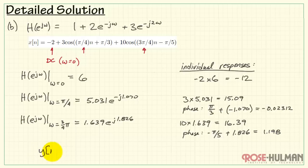Now, with these values, we're in a position then to write the finished expression for the output. We have y of n equals the DC component of minus 12 plus 15.09 times cosine. We use the same frequency, pi over 4 times n, plus the phase shift that we calculated at that frequency.